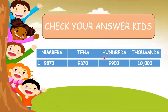Next, in the hundreds. We will find the hundreds place of the given number — it is number eight. The right of number eight is number seven, and seven is more than five. So we will add one to eight, and seven and three will become zero. The answer is 9,900.